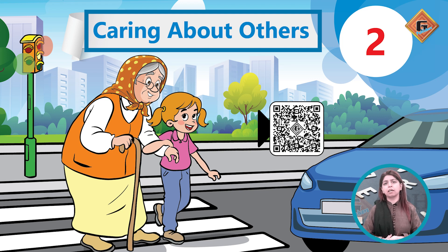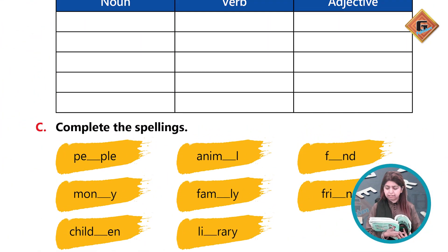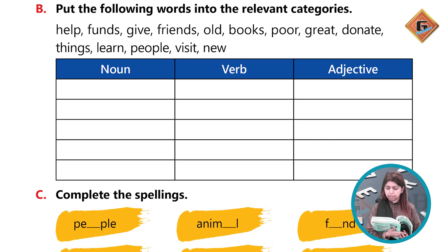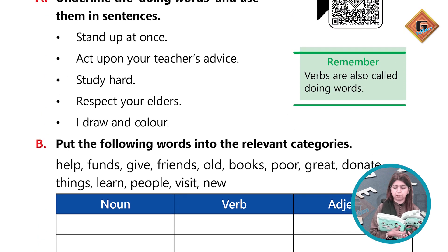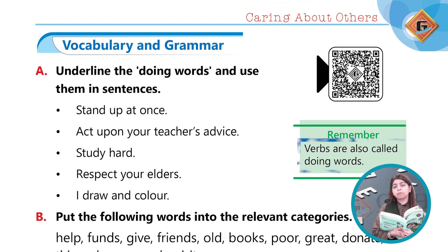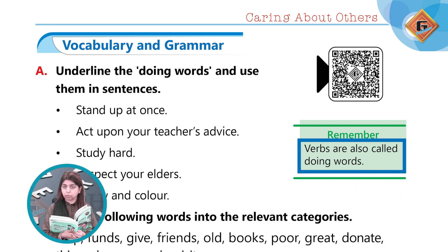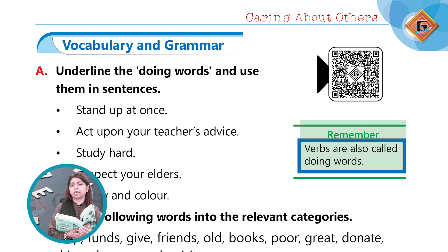We can see the exercise remaining part on page number 17. Here we have a concept of verbs — we have doing words, which means that every word which is a work that is visible to us.